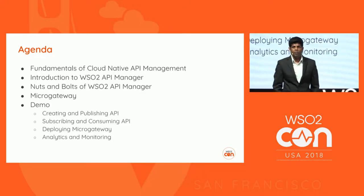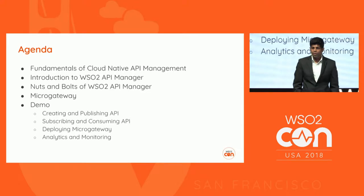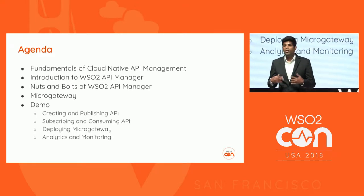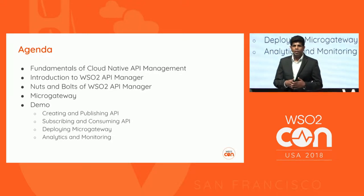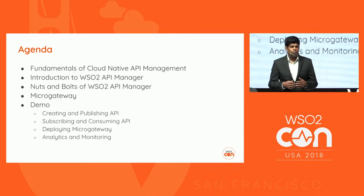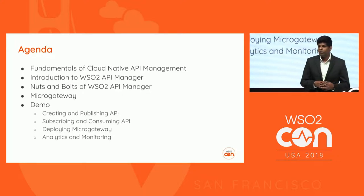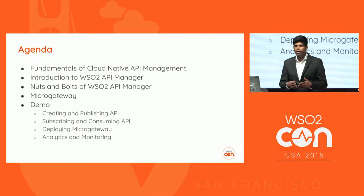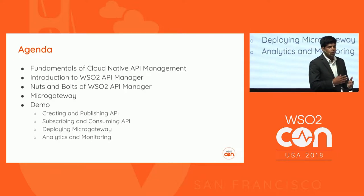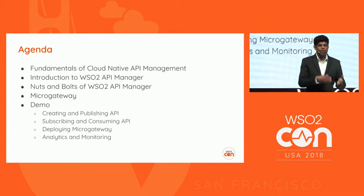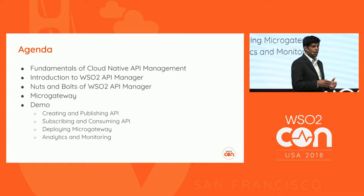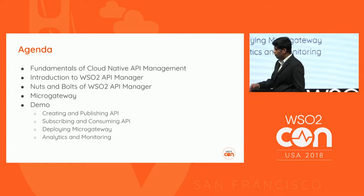First, I will talk about the fundamentals of cloud-native API management — what is cloud-native and how you can fit API management into a cloud-native application delivery model. Then I will introduce WSO2 API Manager and its components. Then we will talk about micro-gateway. Finally, I will do the demo, covering three scenarios: creating API, publishing and consuming it; creating micro-gateway to deploy in various environments like local machine, Docker, and Kubernetes; and if time permits, a quick tour of API analytics.